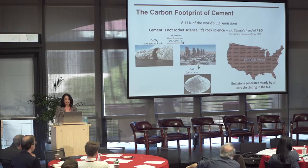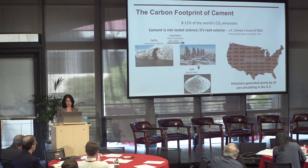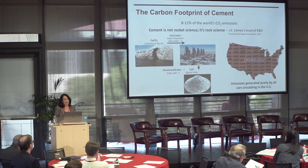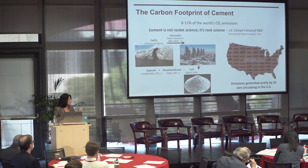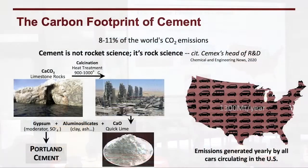This translates into 1,300 megatons of CO2 emitted into the atmosphere — roughly corresponding to the emissions from all cars circulating in the U.S. Calcium oxide or quicklime is mixed with aluminum silicates, clay, fly ash, or volcanic ash, and then gypsum acting as a moderator, to form Portland cement. The first lesson we can draw is that even in the future, searching for alternative raw materials that drastically reduce emissions from limestone remains absolutely the priority.